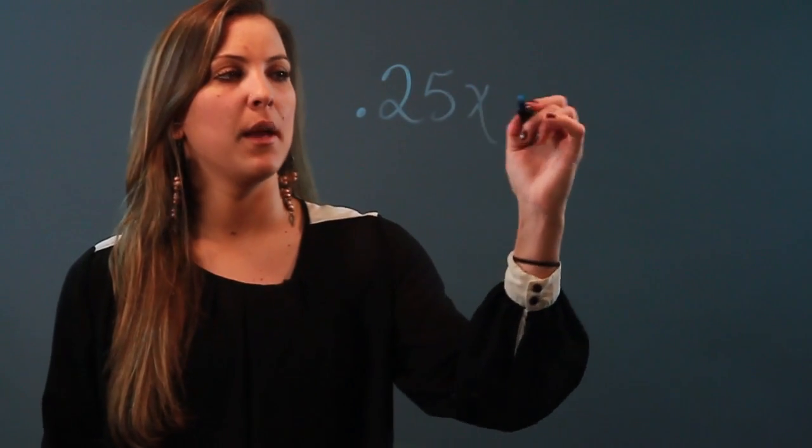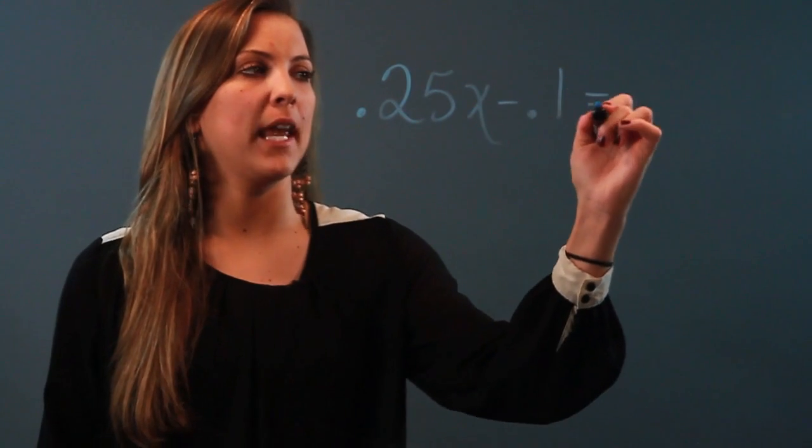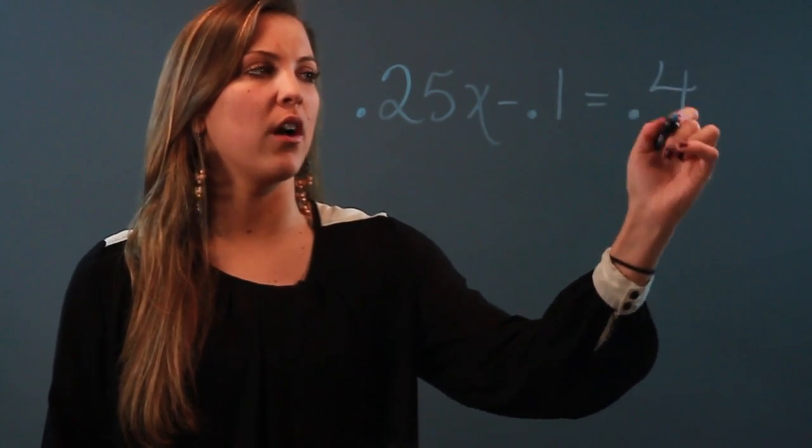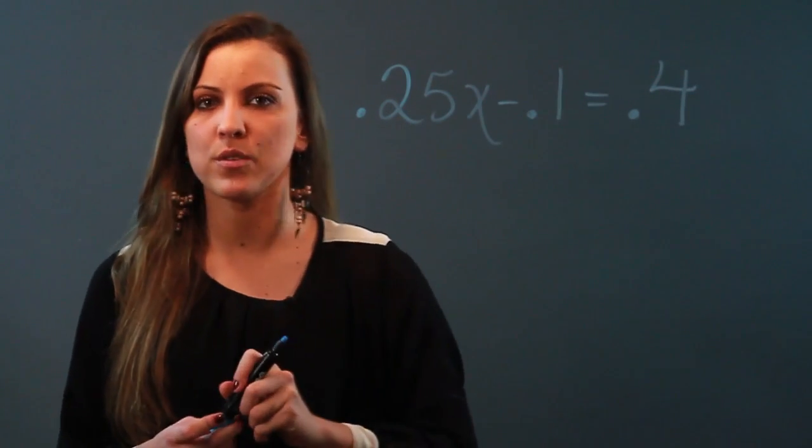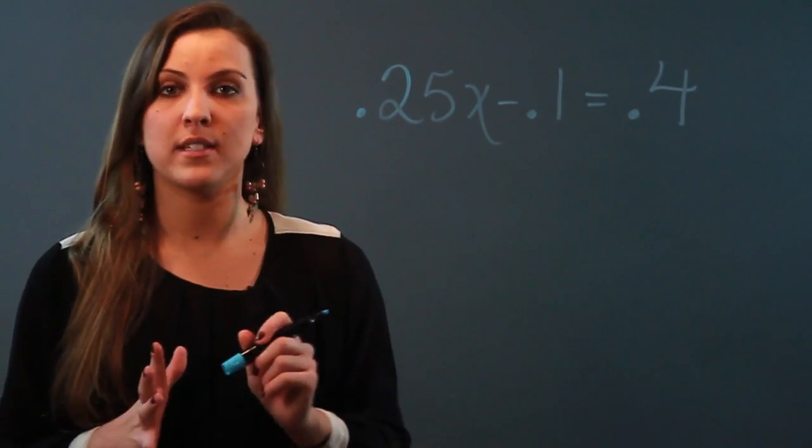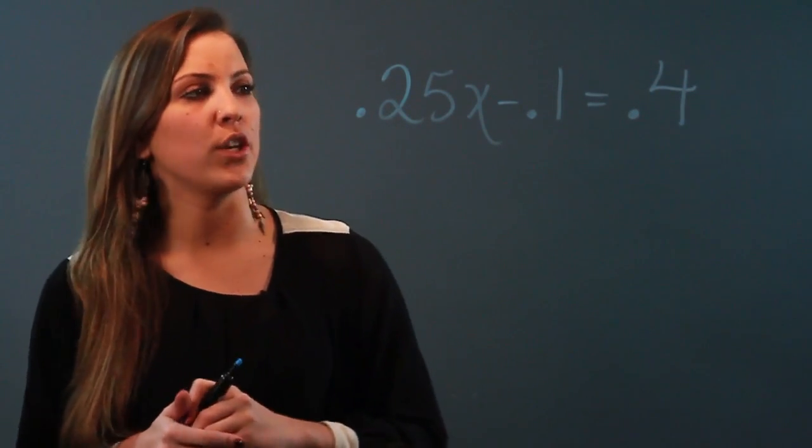If you have an equation like 0.25x minus 0.1 equals 0.4, right away some students are afraid of this equation because it's got decimals all over it. There's a very easy way to solve this without any decimals. Here's what you do.